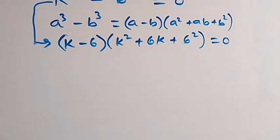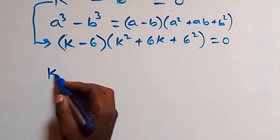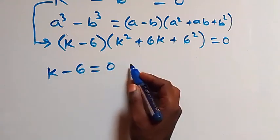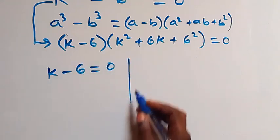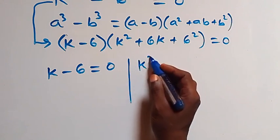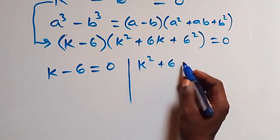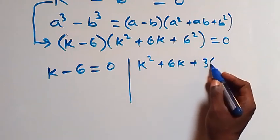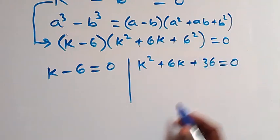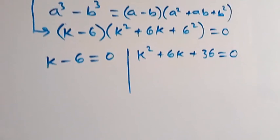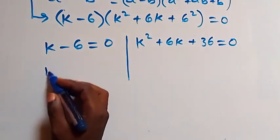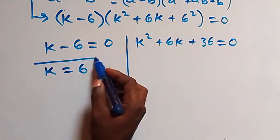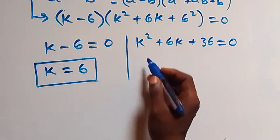From here we also have two cases: k - 6 = 0, or k² + 6k + 36 = 0. On this side, we have k equals 6, which is also a real solution.